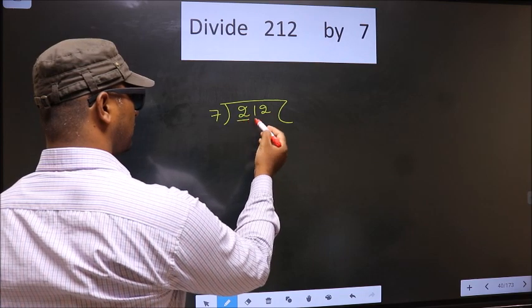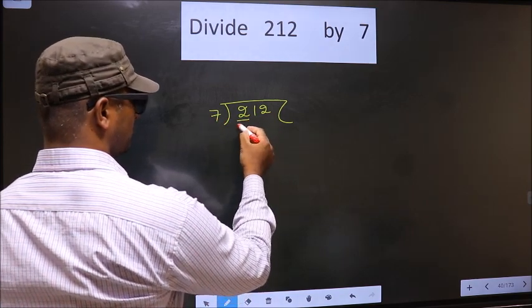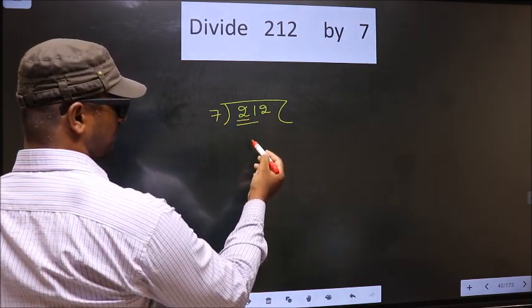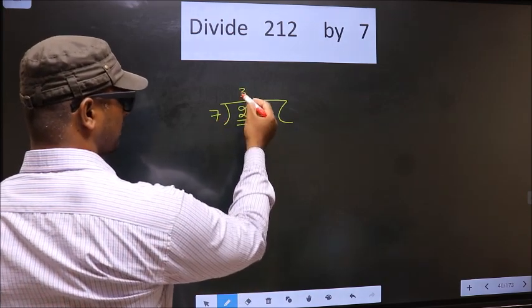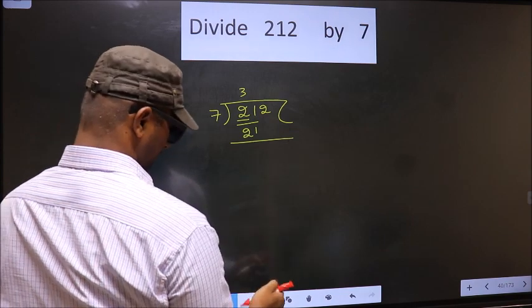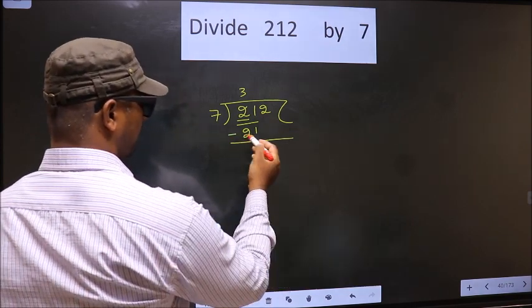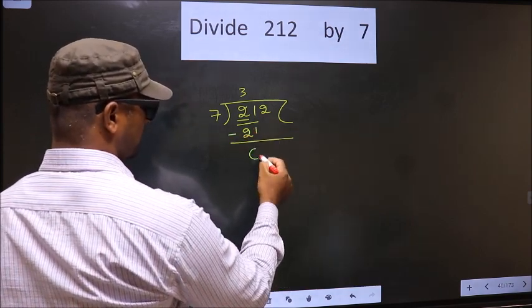Now here we have 2. 2 is smaller than 7, so we take 2 numbers, that is 21. When do we get 21 in 7 table? 7 times 3 is 21. Now you subtract. 21 minus 21 is 0.